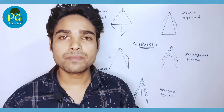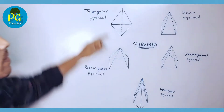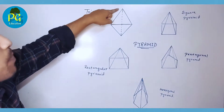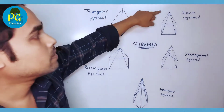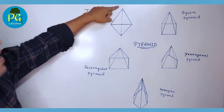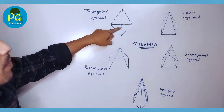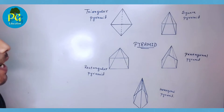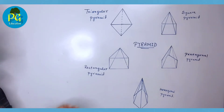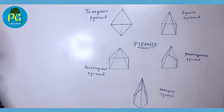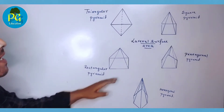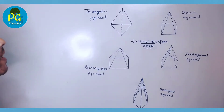There are two types of pyramid: one is a right pyramid and another is an oblique pyramid. If the vertex — this point — is directly above the midpoint of the base, then it is called a right pyramid. In this video we will discuss the right pyramid.